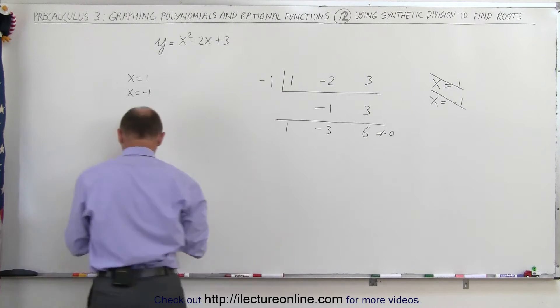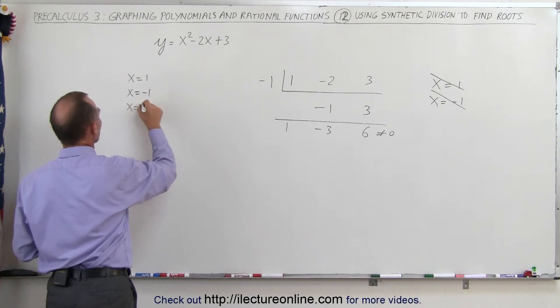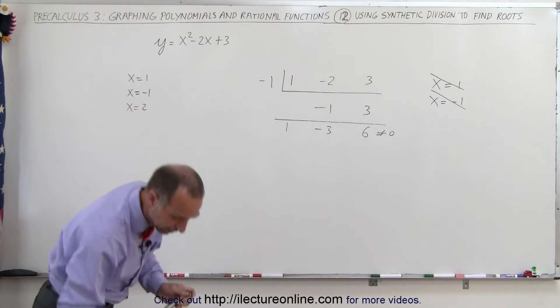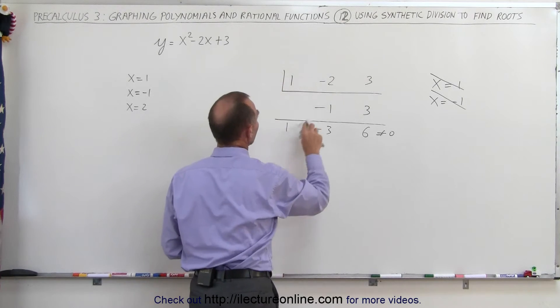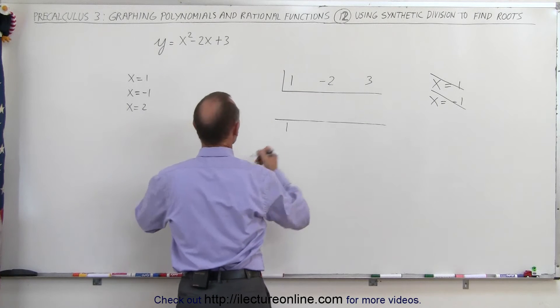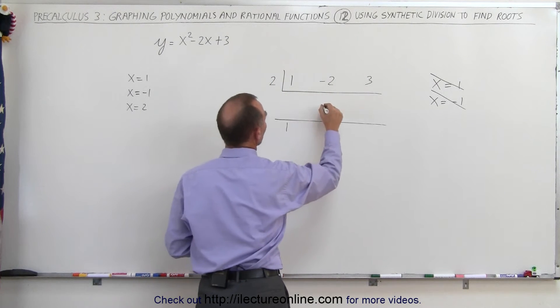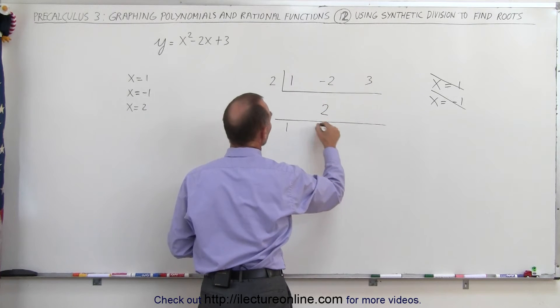Alright, let's try x equals 2. X equals positive 2 and see what we get here. Again, we need to clean up, so this now becomes a positive 2. And so we try x equals a positive 2, we drop down to 1, 2 times 2 is positive 2, add that together, you get 0.